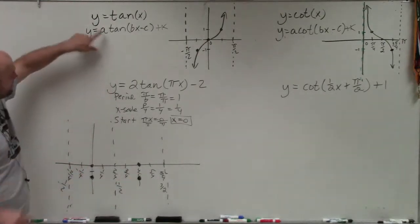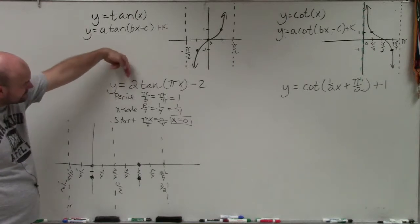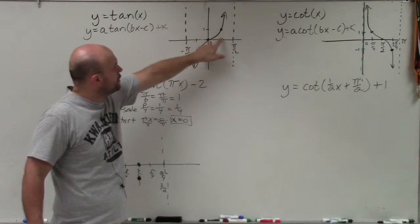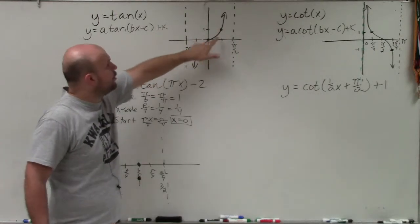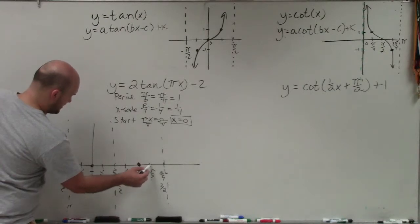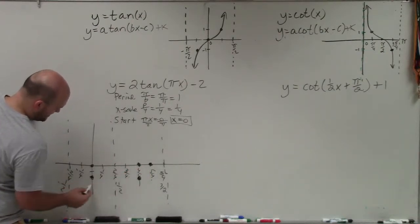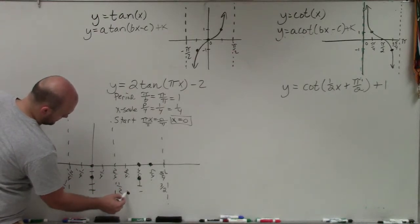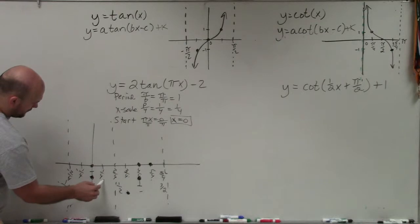Then remember that my a is 2. So rather than having my next point being going over 1, up 1, it's going to go over 1, up 2. So I'm going to go over to my next critical point and then go up 2, which would actually be from there. And then go over 1, go down 2. Over here, I'll go over 1, up 2. And then over 1, down 2.